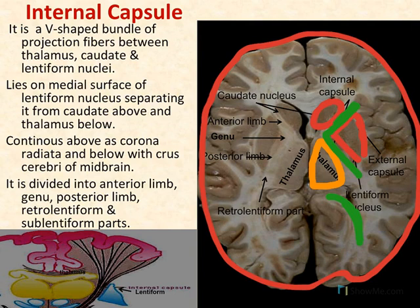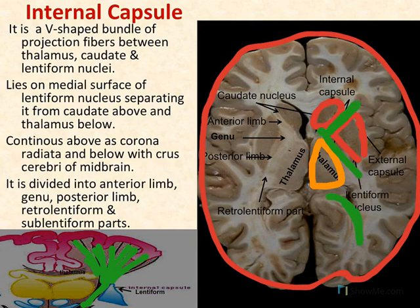The fibers of the internal capsule are continuous above with the corona radiata and continuous below with the anterior part of the midbrain called the crus cerebri. Anatomically, the internal capsule has five parts: the anterior limb, genu, posterior limb, retrolentiform part, and sublentiform part.